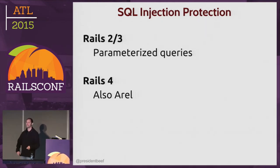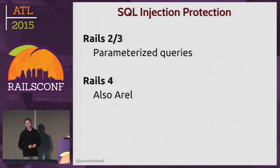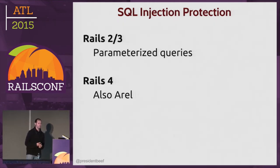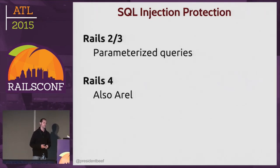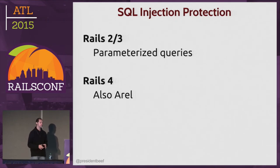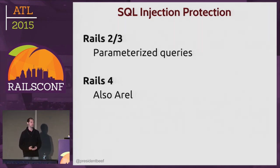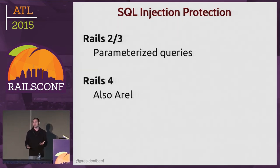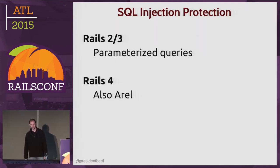SQL injection protection — Rails 2 and 3 have parameterized queries; that's the way to do it. Rails 4 introduced Arel. As far as I can tell, if you use Arel to build your queries, it's basically safe from injection attacks — though if you know I'm wrong, please let me know.